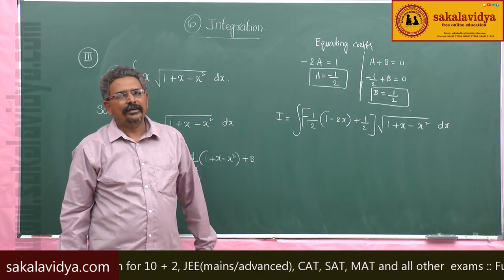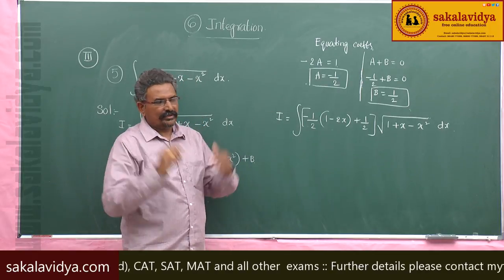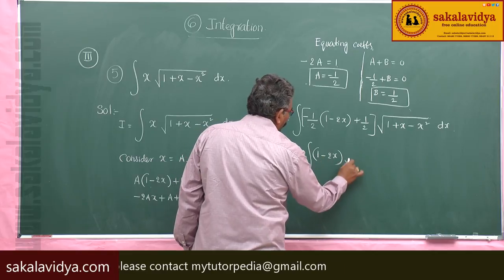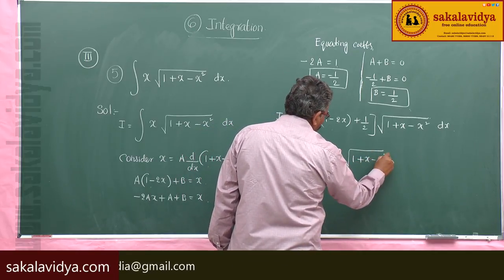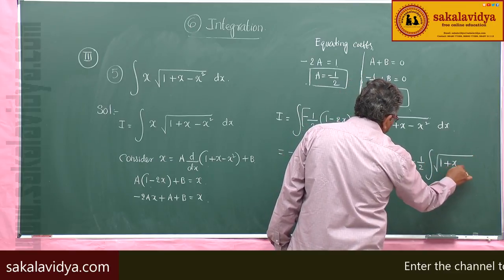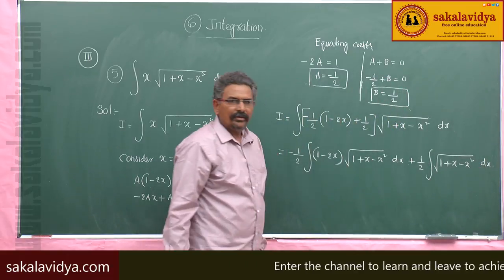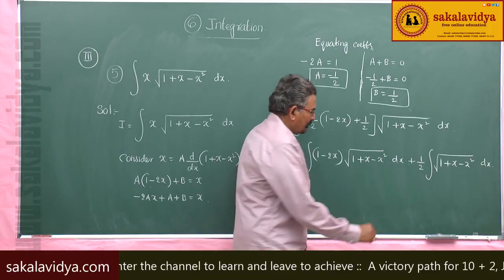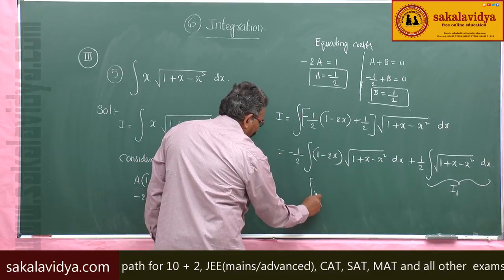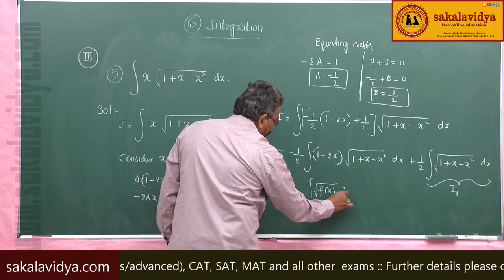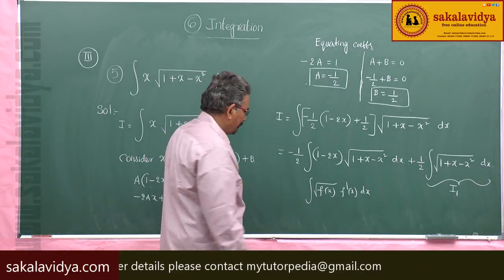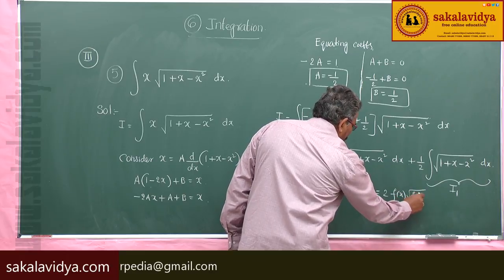What will be the next step? We need to split the problem into two integrals. This can be rewritten as minus 1/2 times the integral of (1 minus 2x) times root of (1 plus x minus x squared) dx, plus 1/2 times the integral of root of (1 plus x minus x squared) dx. The second part is done separately — call it I₁. The first part is in the form integral of f'(x) times root of f(x) dx.